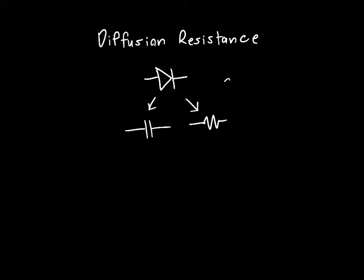In this video we're going to talk about diffusion resistance, the last piece of the puzzle for the circuit model of the diode. We're trying to decompose a diode into a set of capacitors and resistors that are approximately valid for small voltages.